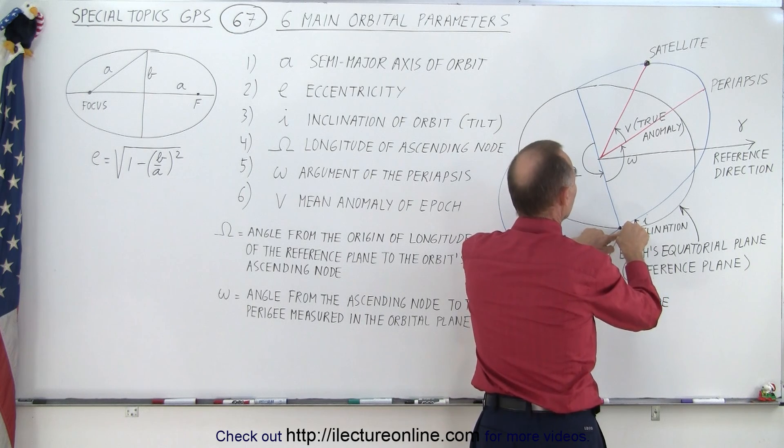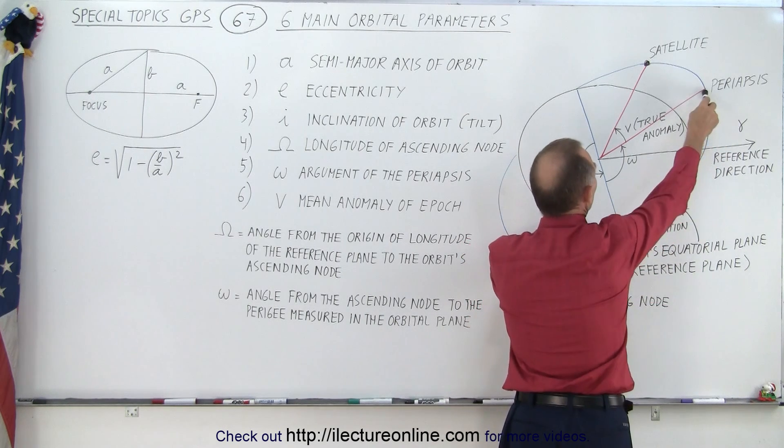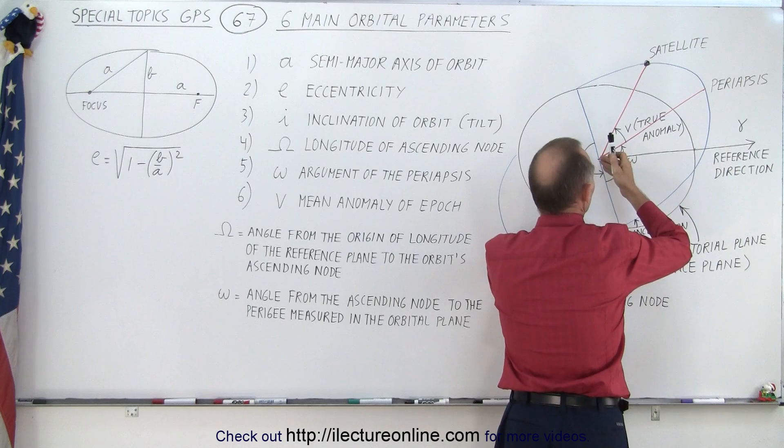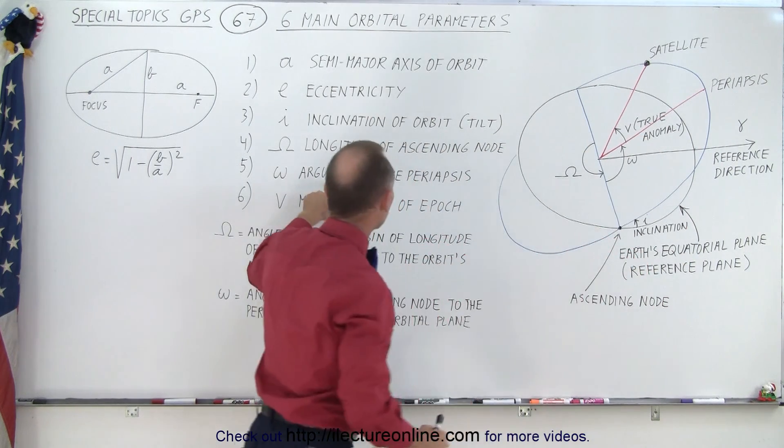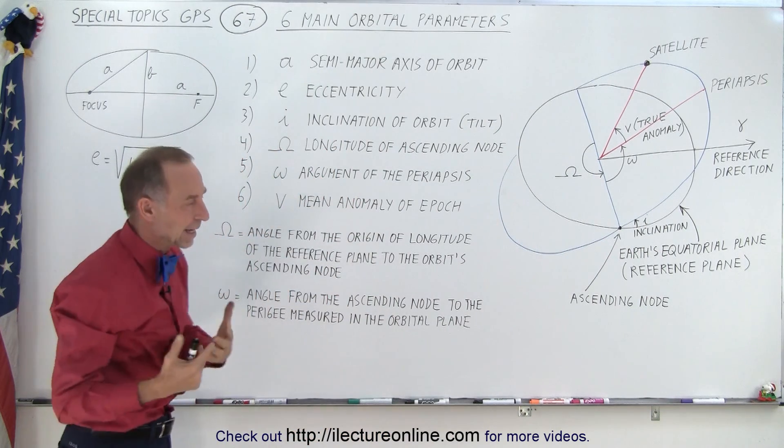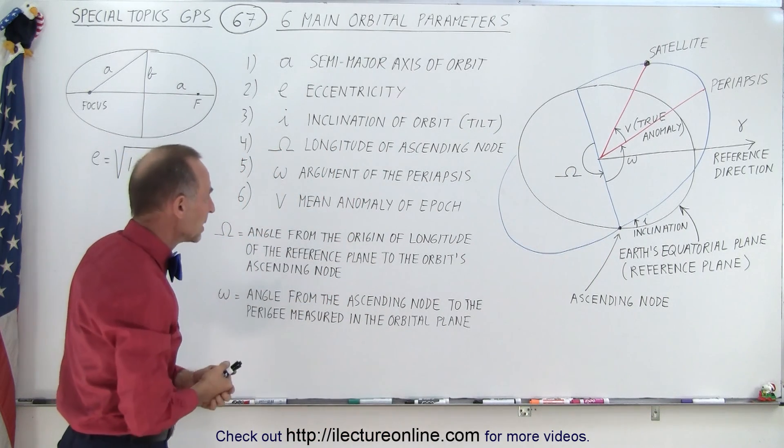And so where it goes through the equatorial plane, from this point, to where the periapsis is, the point that's closest to the center of the gravitational center of the Earth, that is called the argument of the periapsis, and of course that's an angle, that's an angle in radians.